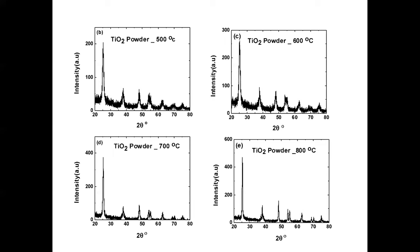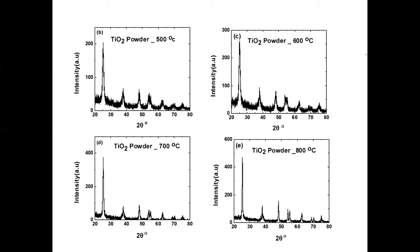Without any heat treatment there is amorphous TiO2, but after applying annealing temperatures across a range of five different values, the crystallinity was enhanced, as shown here. I also calculated the cell parameters and compared them across annealing temperatures. I found that as annealing temperature increases, the diffraction peak intensity also increases, and the lattice constants change accordingly.